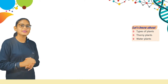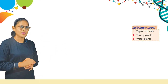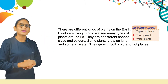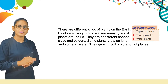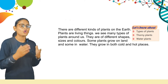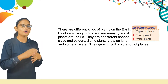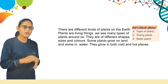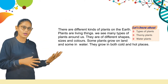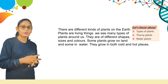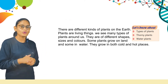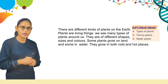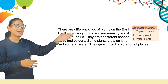Let's know about types of plants — land plants, thorny plants, and water plants. There are different kinds of plants on the earth. Plants are living things. We see many types of plants around us. They are of different shapes, sizes, and colors. Some plants grow on land and some in water. They grow in both cold and hot places. Plants are living things — here are the types of plants.